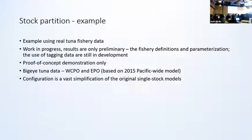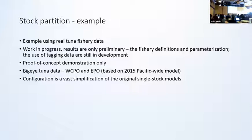Now for the stock partition, we look at an example of it being implemented. There is a big caveat placed upon the results presented here — it's simply a proof of concept that's a work in progress at the moment. It uses a large data set available for the big eye tuna in the WCPO and the EPO, taken from the 2015 Pacific-wide model, which some of you may have seen at CAPEN a couple of years back, and it has a large quantity of size composition and tagging data. The simple stock models used in this demonstration were a great simplification for the initial exploration of the multi-stock implementation.